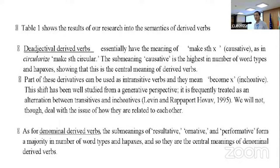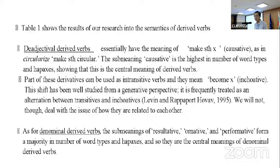The adjectival derived verbs essentially have the meaning of make something X, causative. As in circular → circularize, make something circular. The sub-meaning causative is the highest in number of word types and hapaxes, showing that this is a central meaning of derived verbs. Part of these derivatives can be used as intransitive verbs, and they mean become X. This shift has been well studied from a generative perspective, frequently treated as an alternation between transitives and intransitives. As for denominal derived verbs, the sub-meanings of resultative, ornative, and performative form a majority in number of word types and hapaxes, and so they are the central meanings of denominal derived verbs.